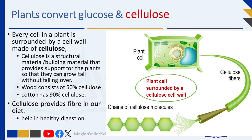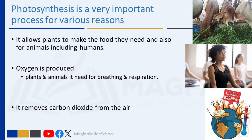Wood consists of 50% cellulose while cotton has 90% cellulose. Cellulose provides fiber in our diet, which cannot be broken down in our bodies but helps in healthy digestion. Photosynthesis is a very important process for many reasons. Firstly, it allows plants to make food for themselves and for animals including humans. Secondly, it produces oxygen needed by plants and animals for respiration. Thirdly, photosynthesis helps remove carbon dioxide from the air — too much CO2 causes global warming, climate change, melting ice, rising sea levels, and changes in weather patterns. Plants, through photosynthesis, help us maintain this balance.